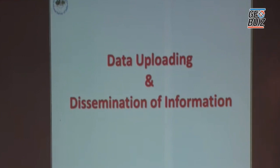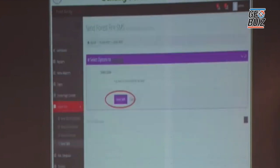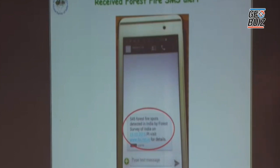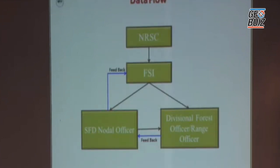Every state now has a nodal officer who receives forest fire points as shapefiles or KMLs. We have also developed an online feedback mechanism where fire points verified on the ground can be reported back through an online system. Currently more than 10,000 registered users across the country are receiving SMS alerts on forest fires. The data flows from NRSC processed fire points to FSI, which does further processing and value addition before sending to state nodal officers, then onwards to divisional forest officers and range officers, with ground feedback coming back through the same chain.